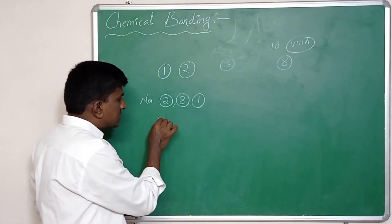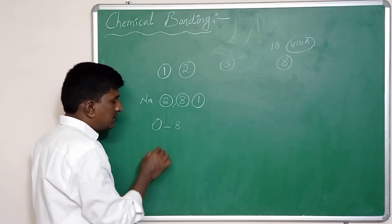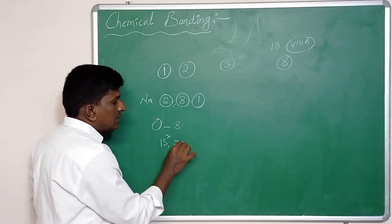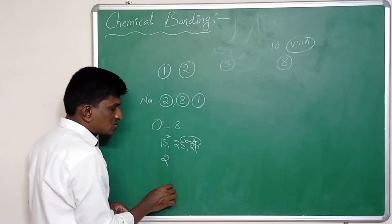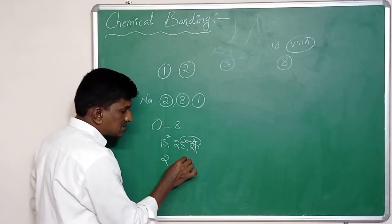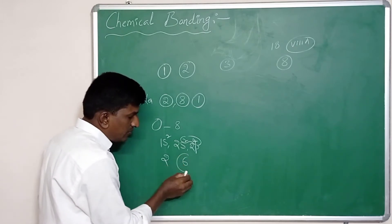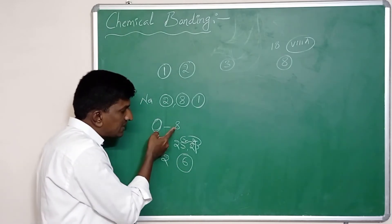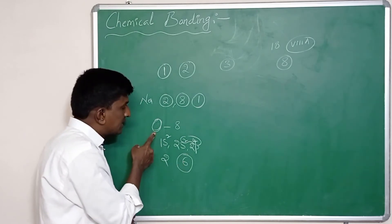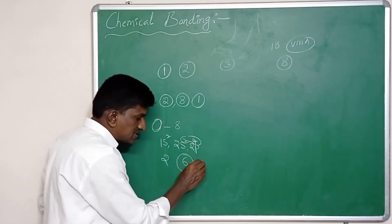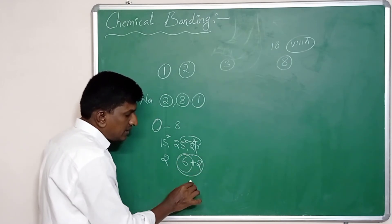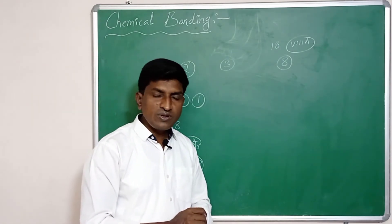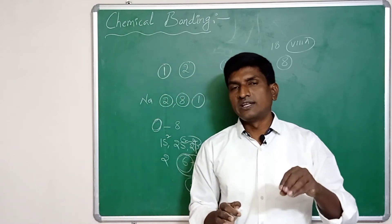Consider oxygen, with atomic number 8. It has two electrons in the first orbit and six electrons in the second orbit. To achieve eight electrons in its outermost orbit, oxygen gains two more electrons through chemical changes, completing its octet and becoming stable.